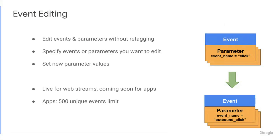The way the feature works is: first, you define what kinds of events you want to edit, and then secondly, you input the data for the new changes you want to make. You can see an example on the right side of this slide, where every time we see an event called "click," we're going to change it to "outbound click." You might want to do this because in Google Analytics 4 properties, the click event fires anytime a click leaves your website. By making this change, it becomes much more explicit and clear to users of your analytics property that this is a click leaving your website.